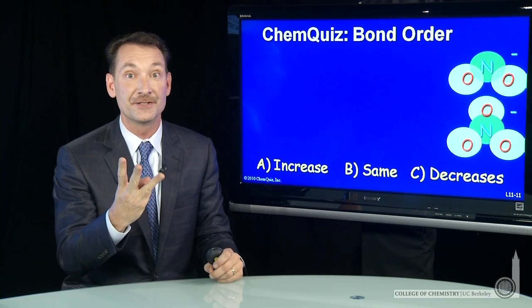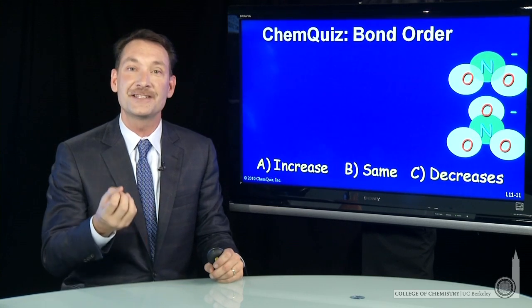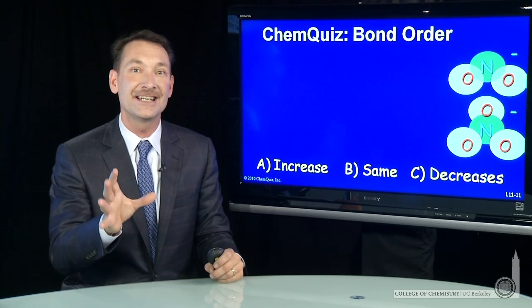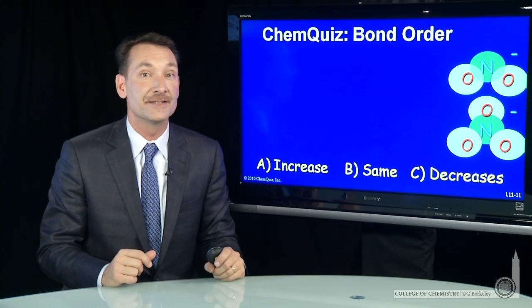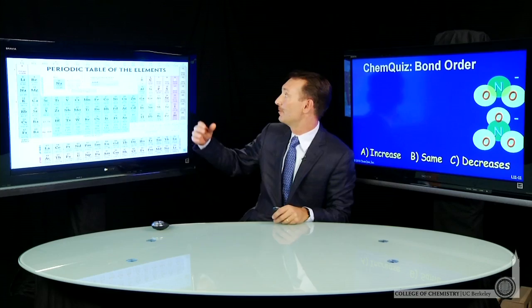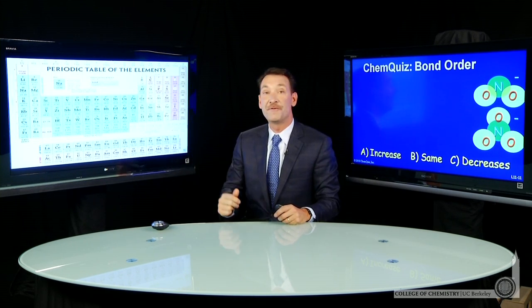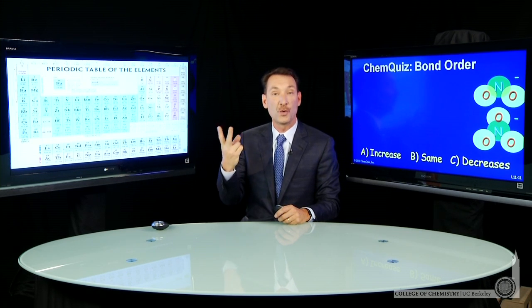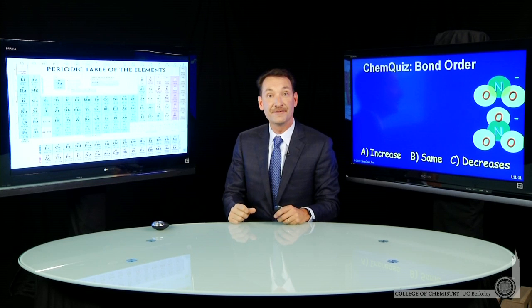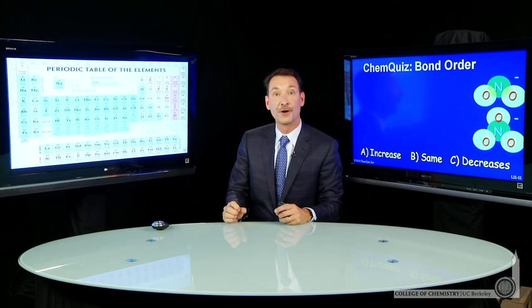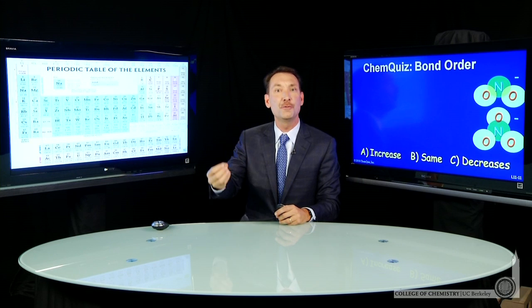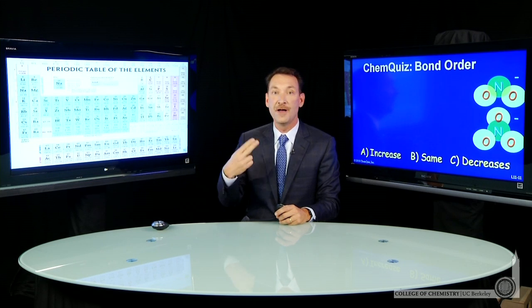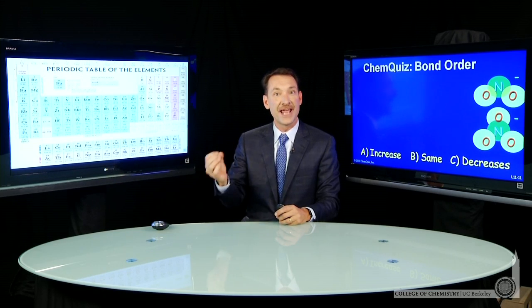Ozone has three oxygen atoms. Each has six valence electrons, so that's 18 electrons — ozone is an 18-electron system. What about NO2 minus? Looking at the periodic table: oxygen has six valence electrons, nitrogen has five. Two oxygens gives 12 electrons, plus five is 17 for NO2. But we're talking about NO2 minus, so we add one from the charge — that's 18. So an 18-electron system.